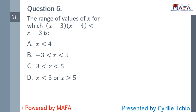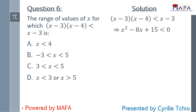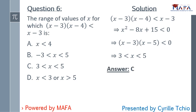Question six: find the range of values of x for which (x−3)(x−4) is less than (x−3). Expanding and simplifying, you get x² minus 8x plus 15 less than zero. Factorising gives (x−3)(x−5) less than zero. Solving this inequality gives the answer C. Try it on rough paper and leave a comment if you get a different answer.